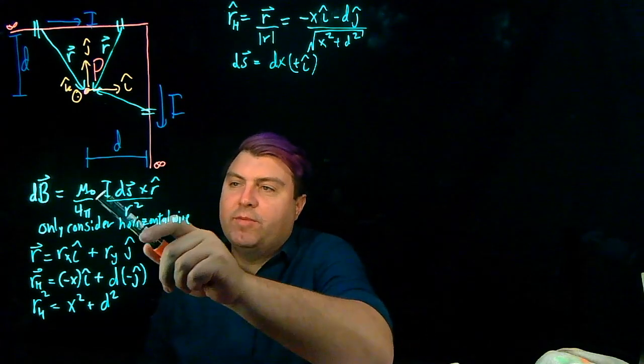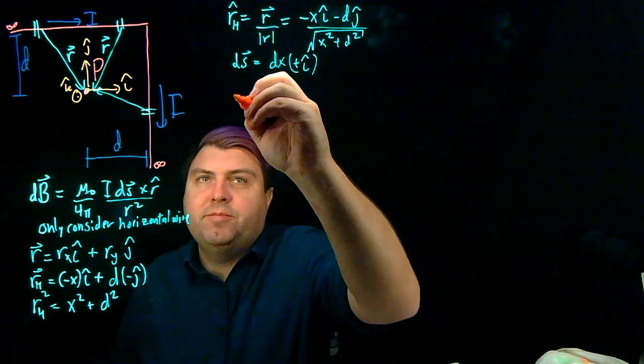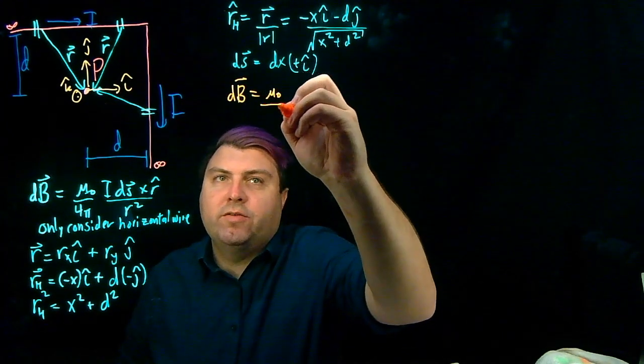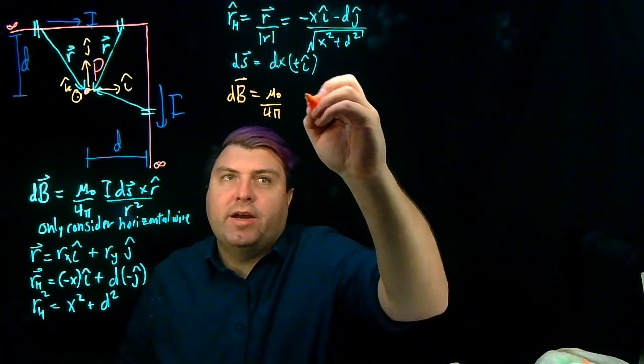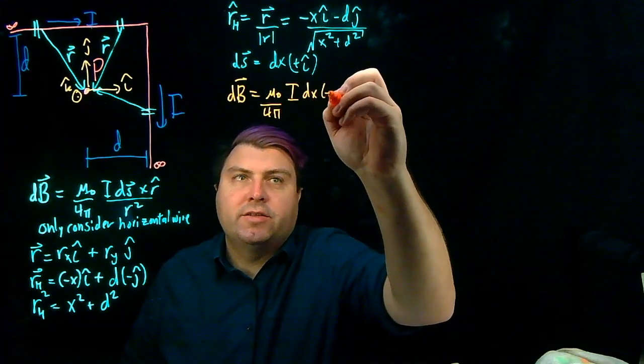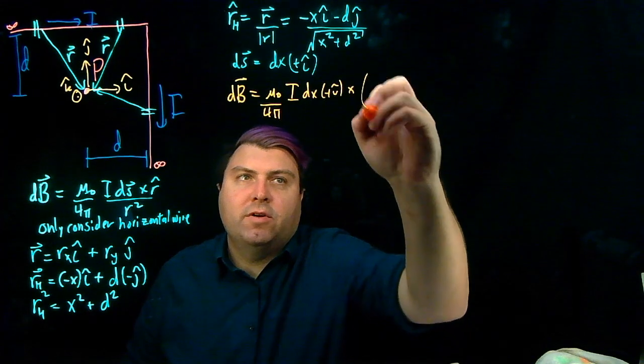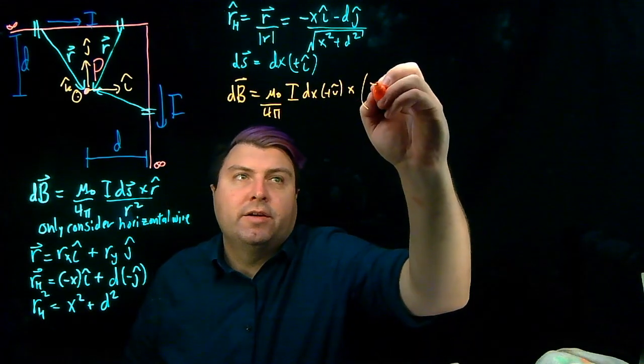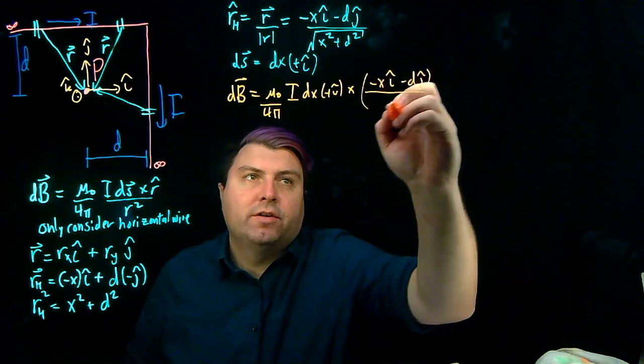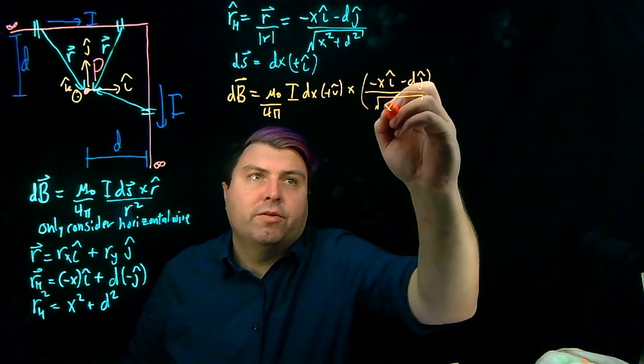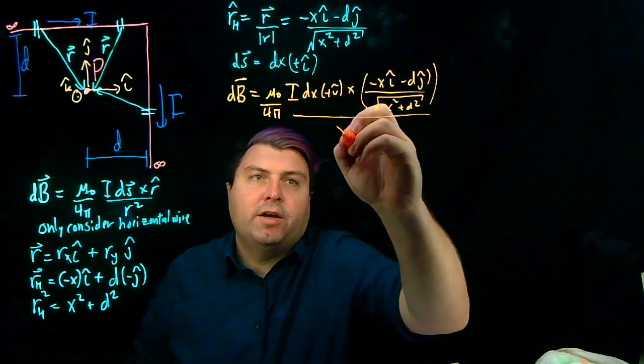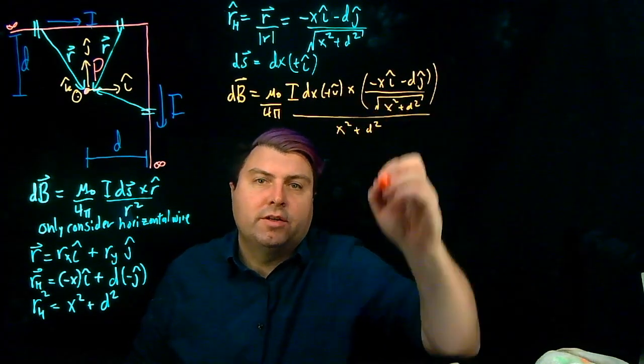So now that I have all of my pieces, I can write what my dB is. So I have my mu naught over 4 pi. My i is just defined as i. My ds is dx positive i hat. And then I'm crossing it with r hat. Negative x i hat minus d j hat over square root of x squared plus d squared. And then I have to divide by x squared plus d squared.